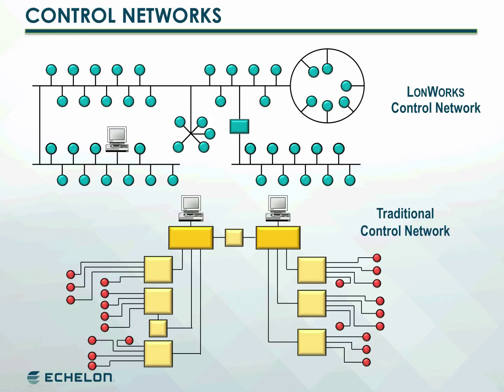LawnWorks provides an open platform on which thousands of suppliers have built open, interoperable products. This robust, high-performance platform provides a flat architecture without gateways or proprietary hardware. By using peer-to-peer networking to distribute decision-making throughout the network, LawnWorks provides a highly reliable, fault-tolerant, scalable control networking architecture that can be easily expanded and updated as needed over time.